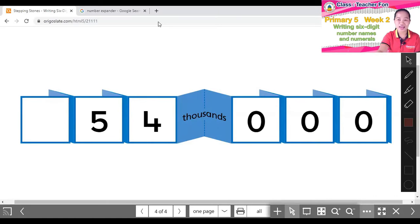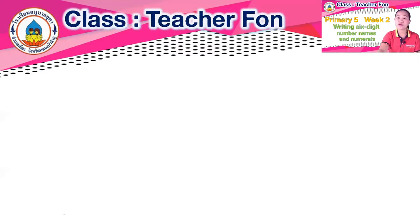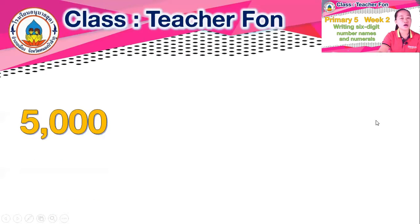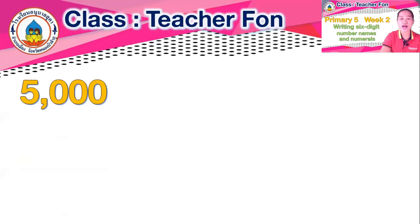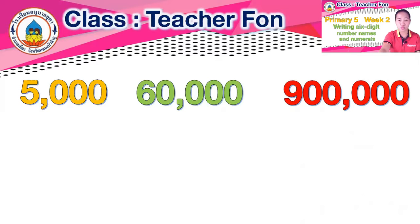Now let's continue. I need somebody to tell me a number in the thousands. What number in one thousand do you want to tell me? Five thousand. And the next number — sixty thousand. And I need one more number in the hundred thousands: nine hundred thousand.